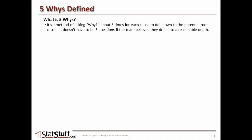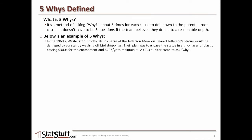There's a great illustration I like to use to help explain how the 5 Whys concept could work. I don't know if this is a true example, but even if it's not, it's still a great example. In the 1960s, Washington DC officials in charge of the Jefferson Memorial were concerned that the Jefferson statue would be damaged by constantly washing off bird droppings. Their plan was to encase the statue in a thick layer of plastic that would cost about $300,000 for the encasement and about $20,000 a year to maintain.